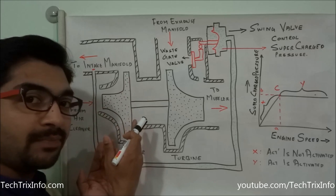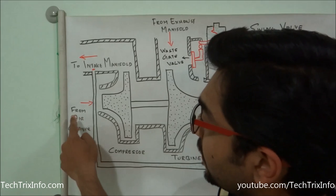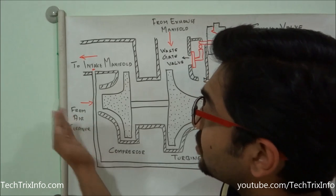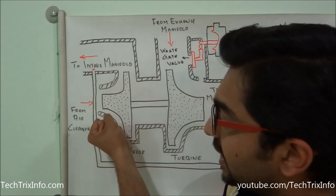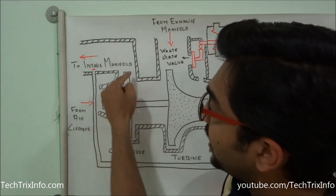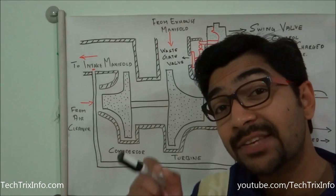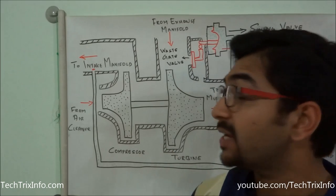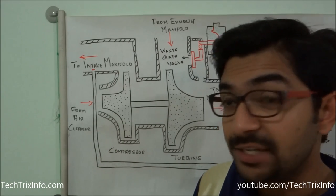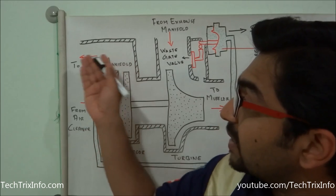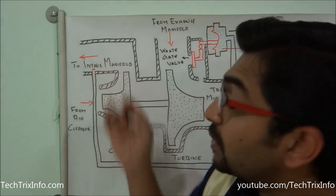This is the compressor unit — the turbine powers the compressor. As the compressor starts to rotate, it is connected towards the air cleaner, so it sucks air from the atmosphere through the air cleaner and compresses that air. That compressed air is then supplied to the intake manifold of the diesel engine.